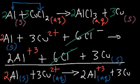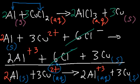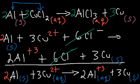Single replacement reactions are redox reactions because the reaction works by transfer of electrons. The aluminum metal turned into the aluminum 3+ cation, meaning it lost three electrons — aluminum was oxidized. The copper 2+ ion went from plus two to zero, so each copper ion gained two electrons — copper was reduced. Because aluminum was oxidized, it is the reducing agent. Because the copper 2+ ion was reduced, it is the oxidizing agent.